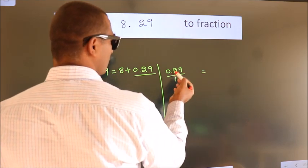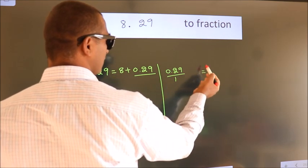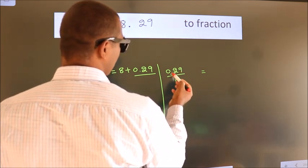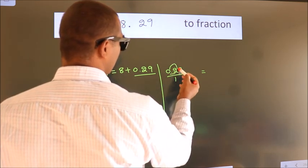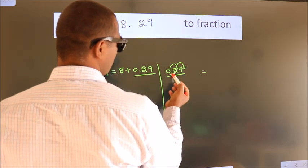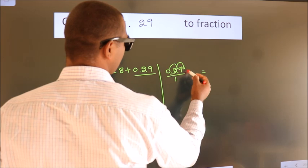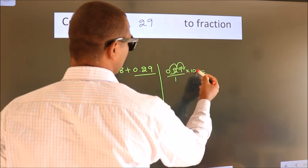To convert this to fraction, we have to move this decimal after 1, 2 numbers. To move this decimal after 2 numbers, multiply it with 100.